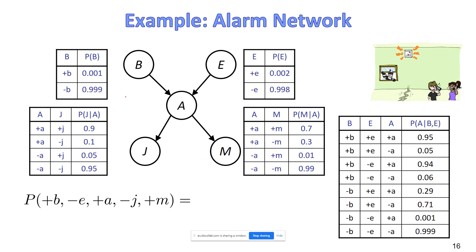For each node we have its CPT. Given the BayesNet, we can compute any joint probability — at least a full assignment joint probability, which means a joint probability that has all the variables. BayesNet makes the chain rule formula much simpler, because each variable is conditioned only on its parents, not all previous variables.